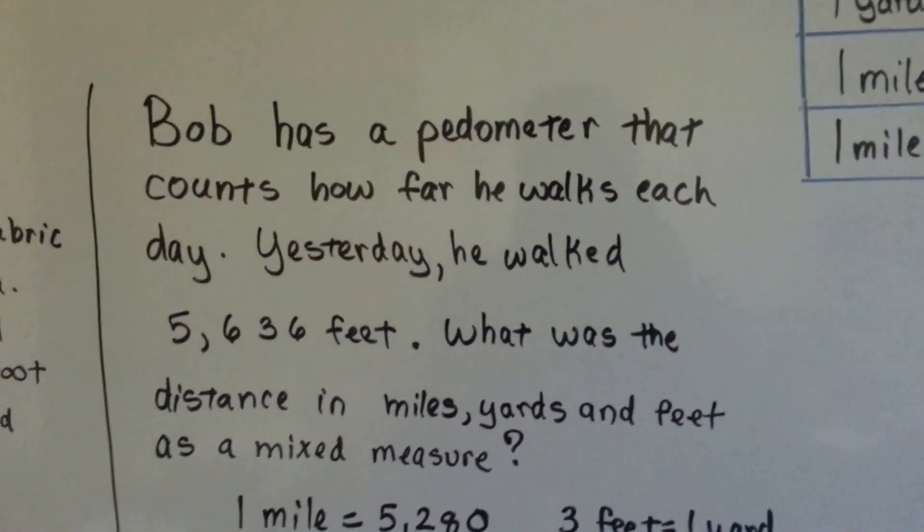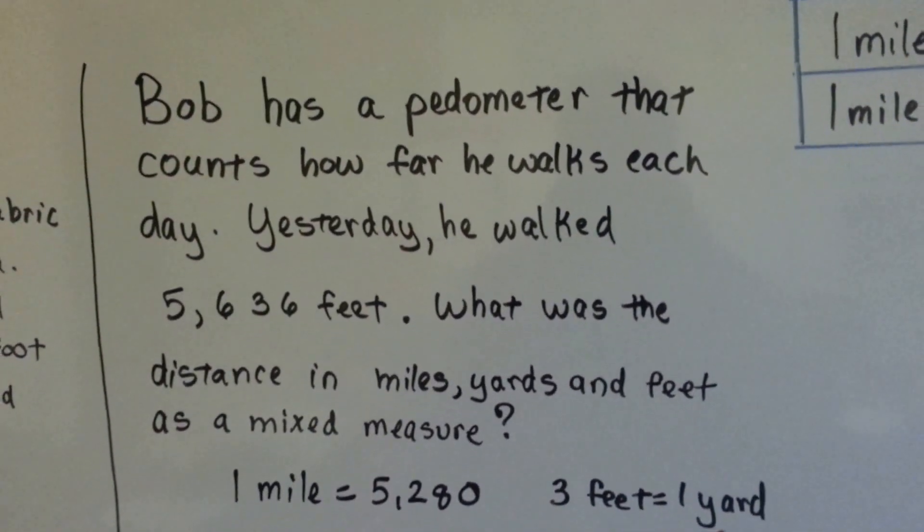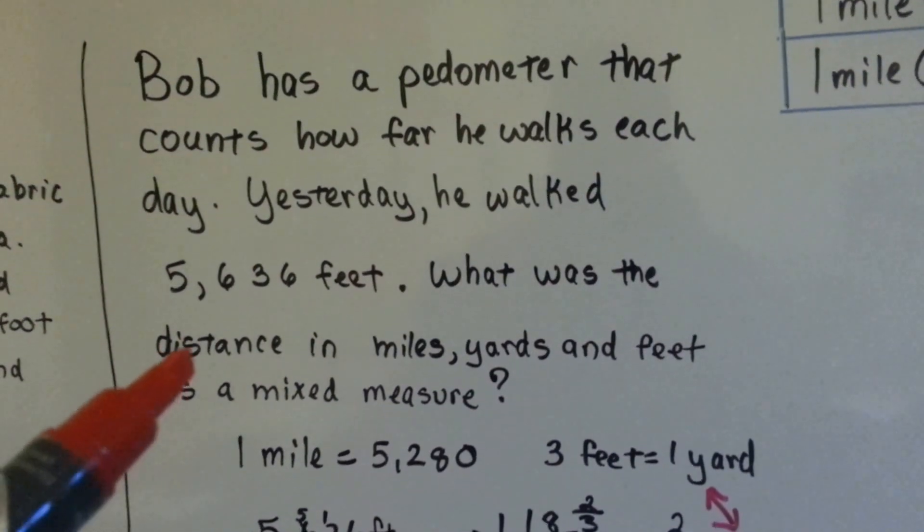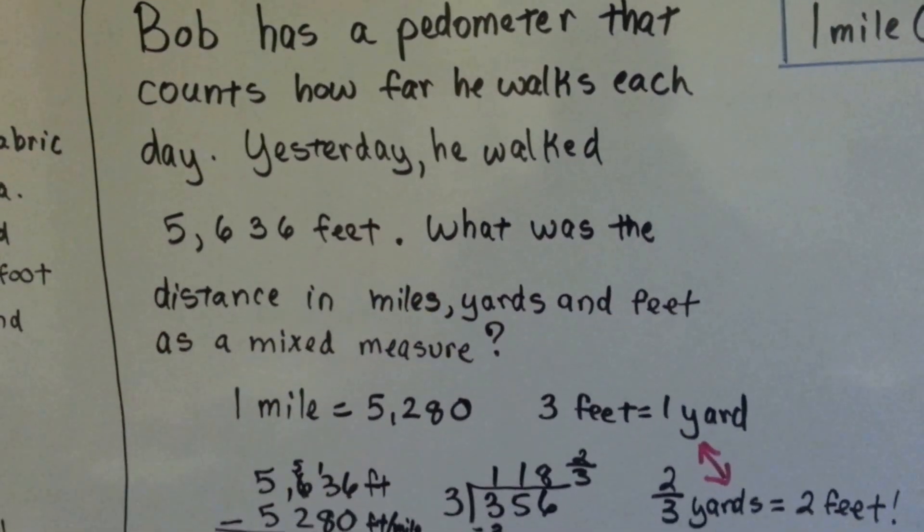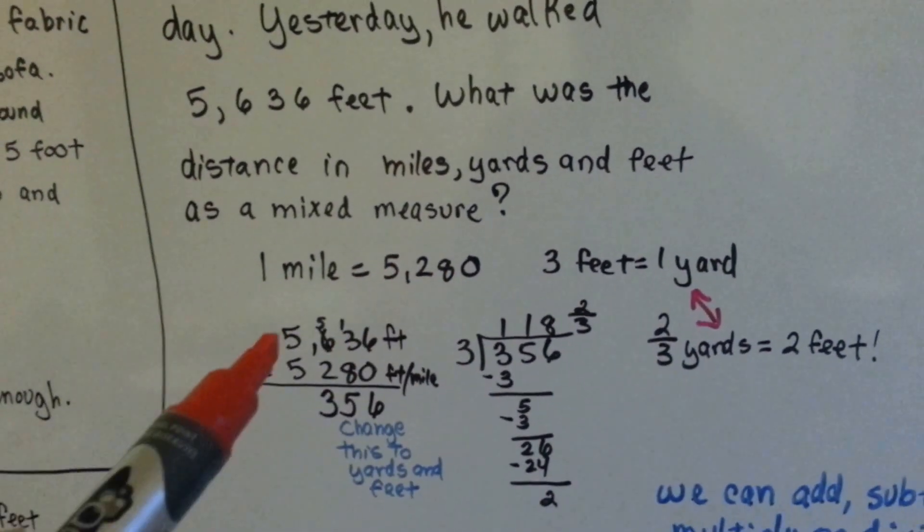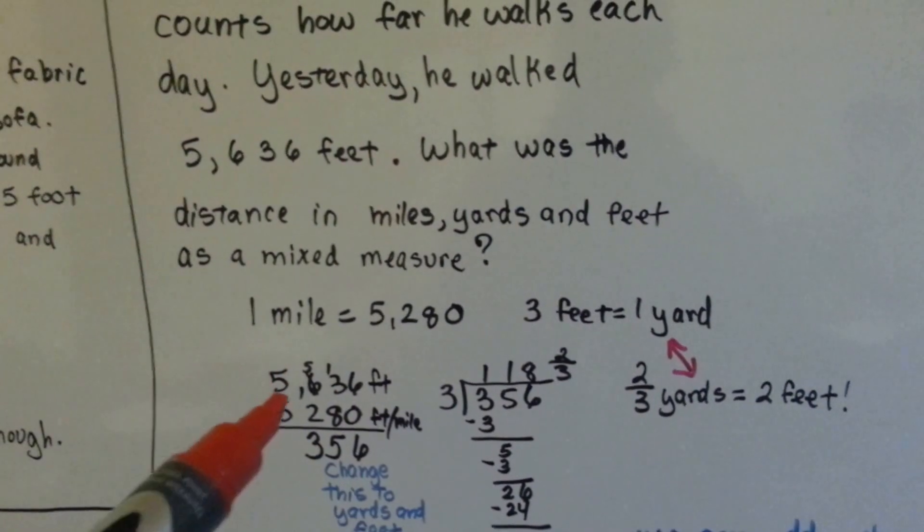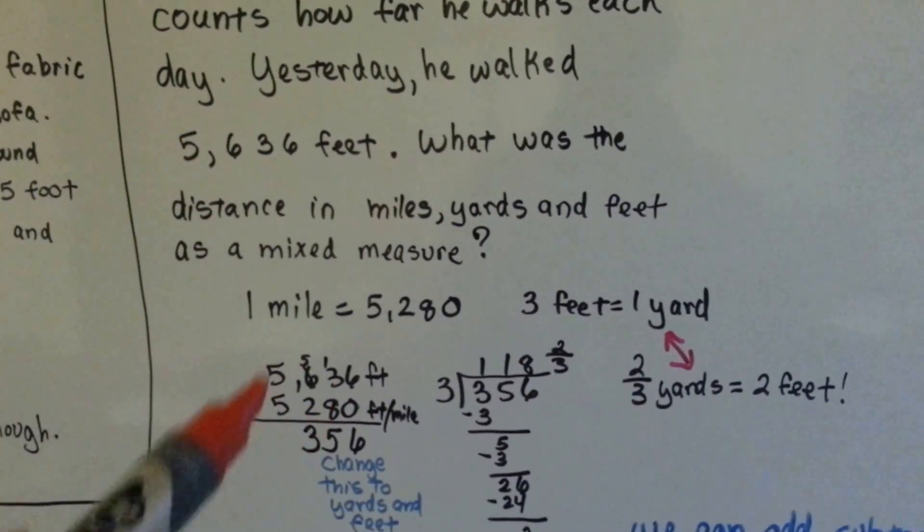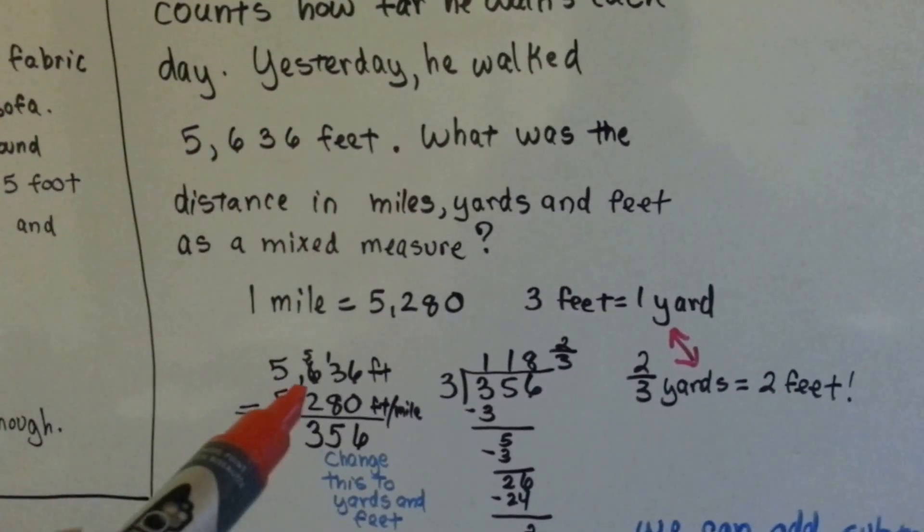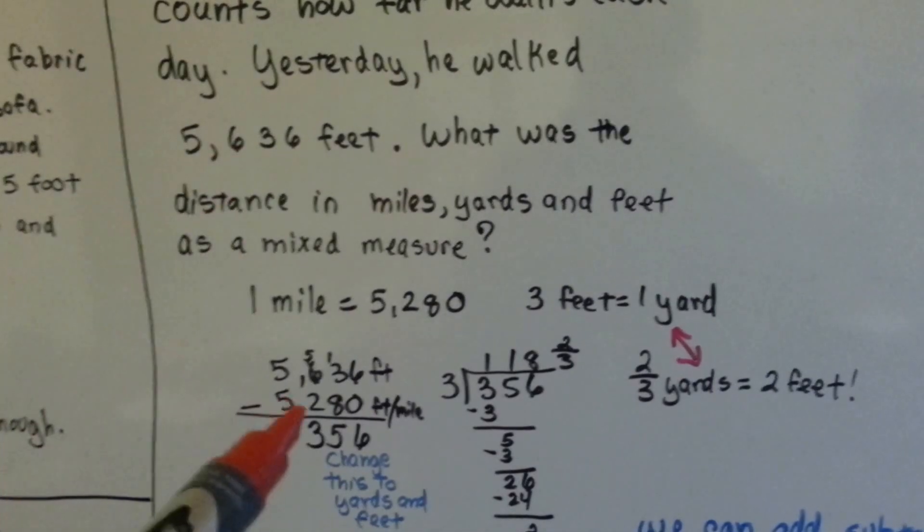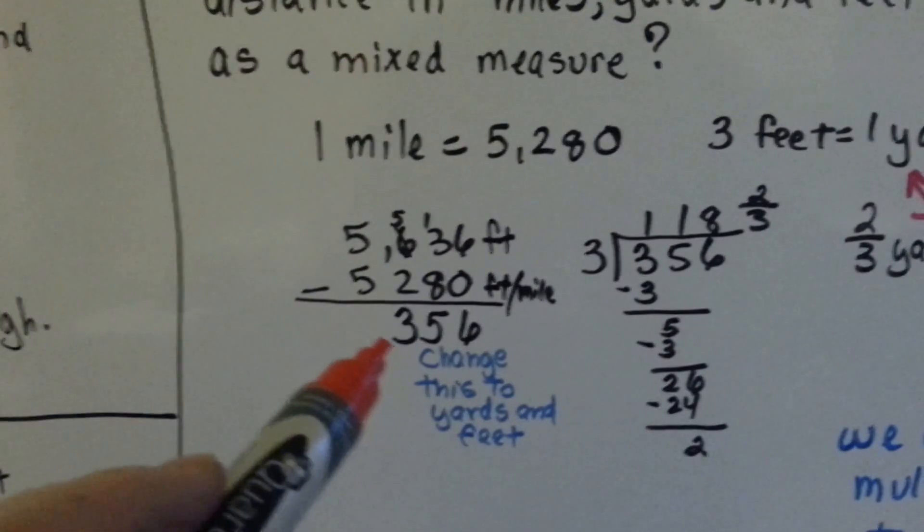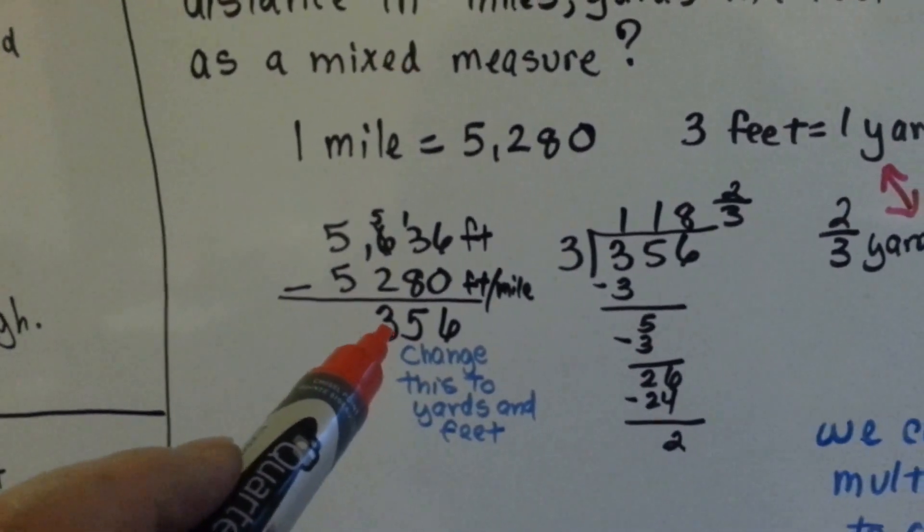Bob has a pedometer that counts how far he walks each day. Yesterday, he walked 5,636 feet. What was the distance in miles, yards, and feet? A mixed measure. Well, one mile is 5,280 feet, so we subtracted his amount, the mile amount from his amount, because he walked more than a mile. A mile is 5,280, he walked 5,636, so we subtracted the amount of feet in a mile from the distance he walked, and we still had 356 feet left over.